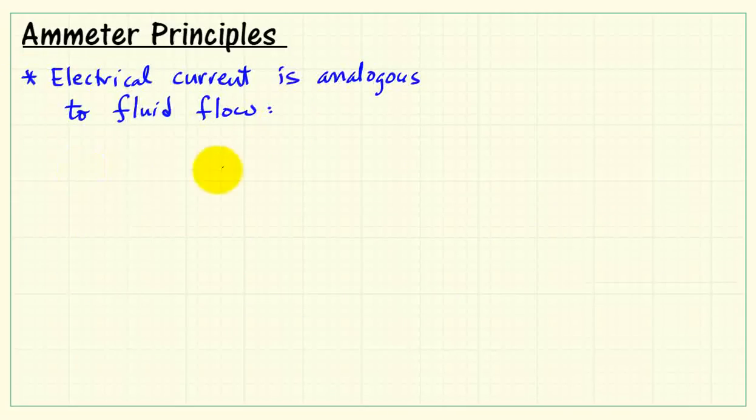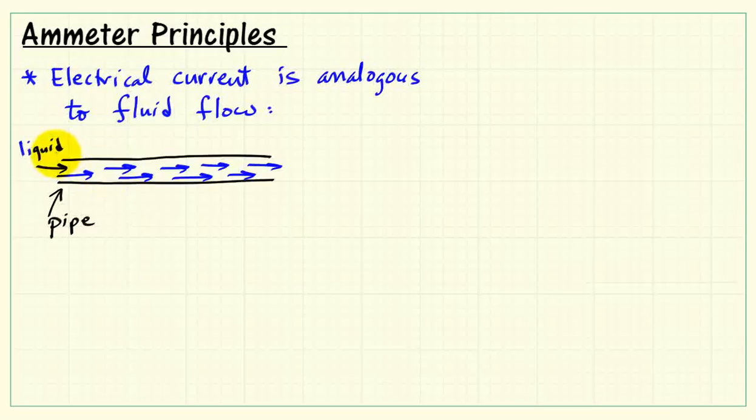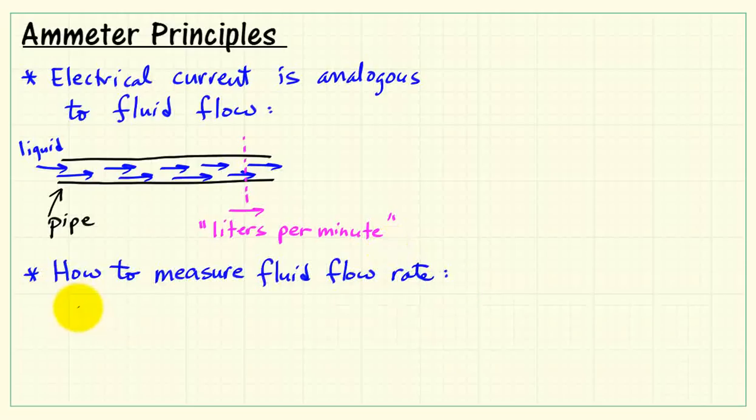Now we can make some analogies to fluid flow, and this might help you better understand the notion of electrical current. Here we have a pipe with liquid flowing through the pipe, and as you can imagine, perhaps liters per minute is one measure of the flow rate.